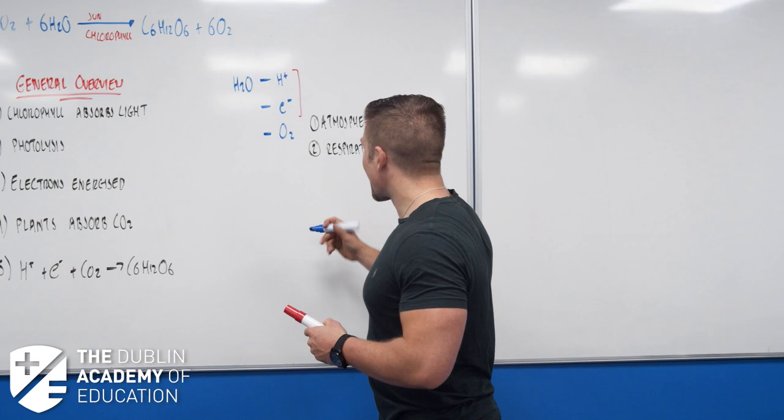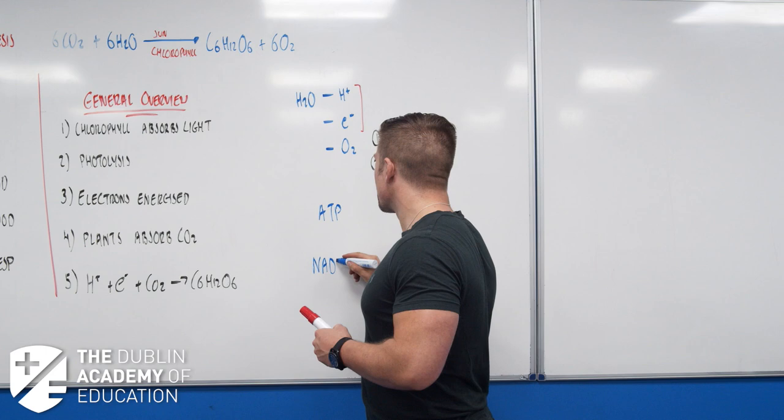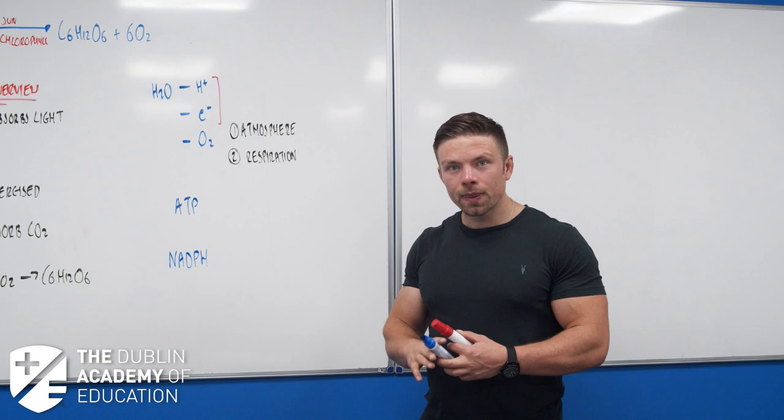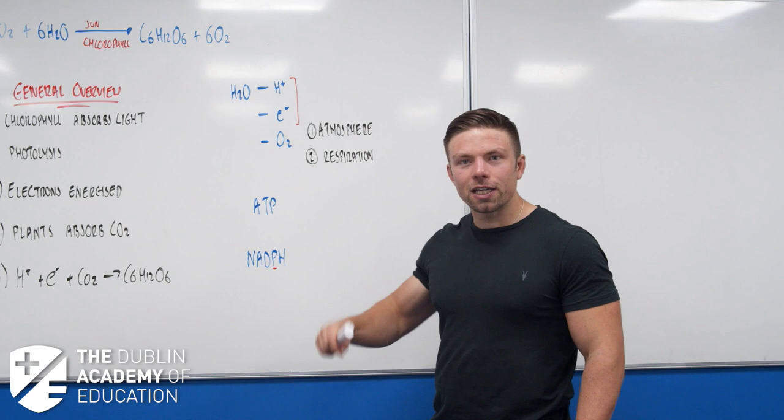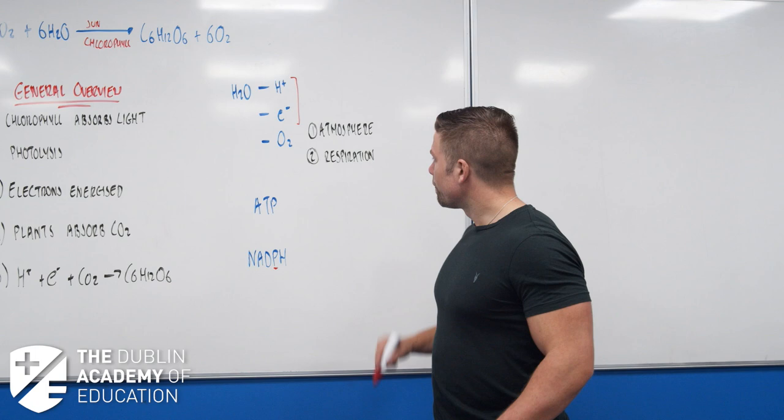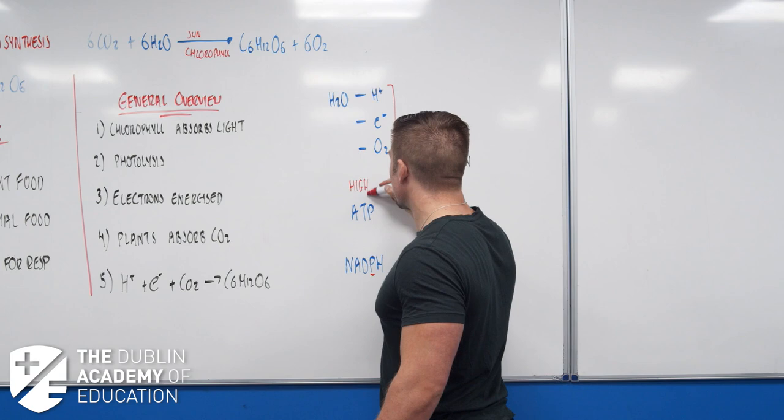We have two energy carriers to talk about: ATP and NADPH. It's P when it's photosynthesis - P for photosynthesis. In respiration, no P, but everything else is exactly the same. These are what's known as high energy carriers.